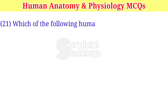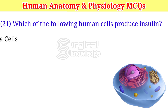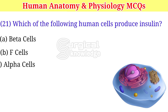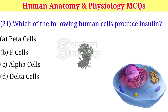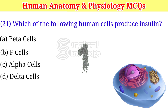Which of the following human cells produce insulin? A. Beta cells. B. F cells. C. Alpha cells. D. Delta cells. Right answer is alpha cells.